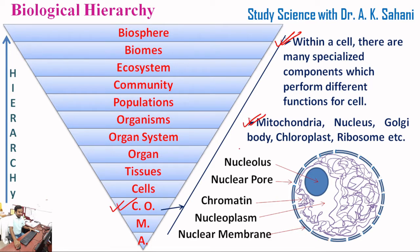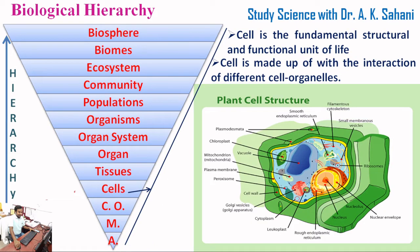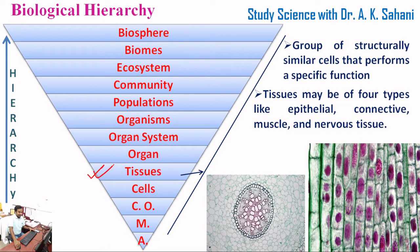The next level is cell. Cell is the fundamental structural and functional unit of life. A cell is made up of different interacting cell organelles. You can see here a typical plant cell structure.